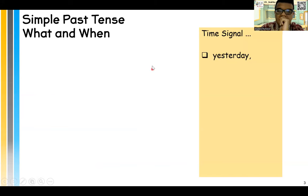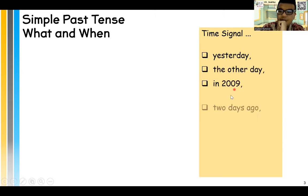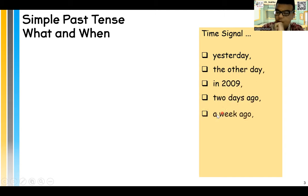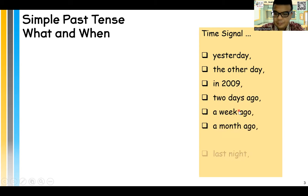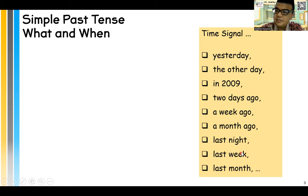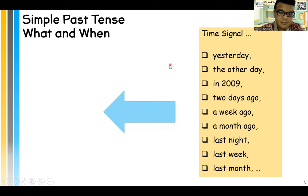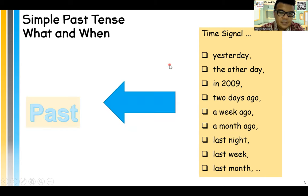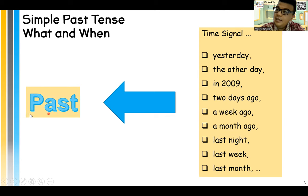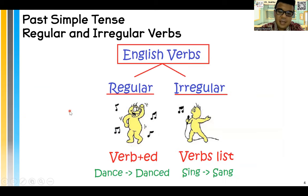So what are time signals for the simple past tense? Yesterday, the other day, in 2009, two days ago, a week ago, a month ago, last night, last week, last month, etc. The key word here is specific time — all of these are specific time in the past.